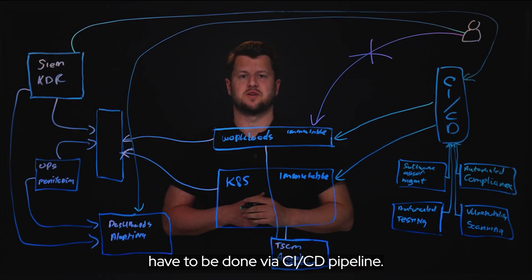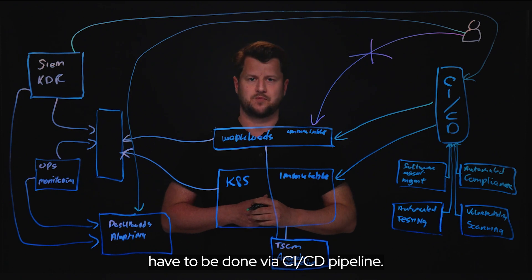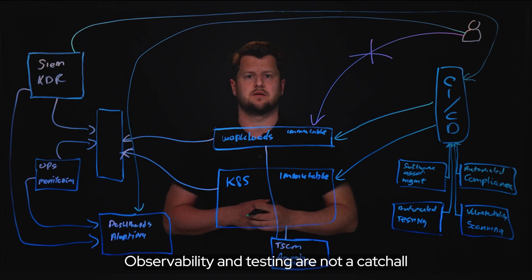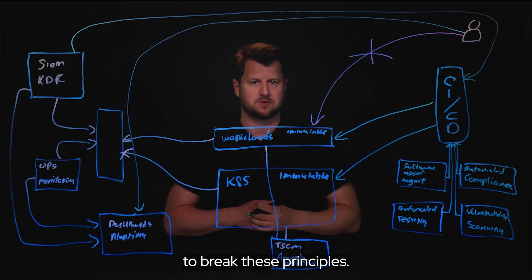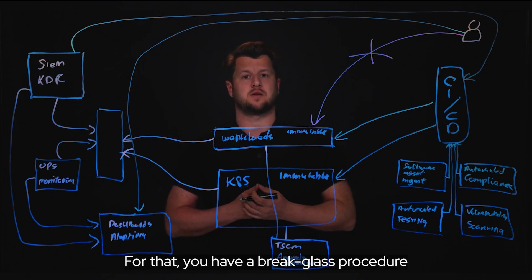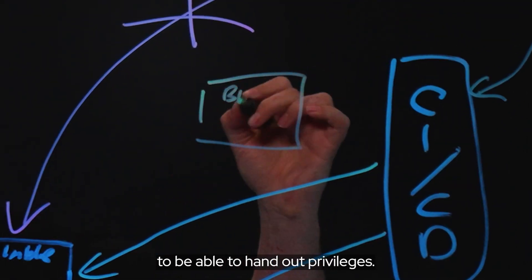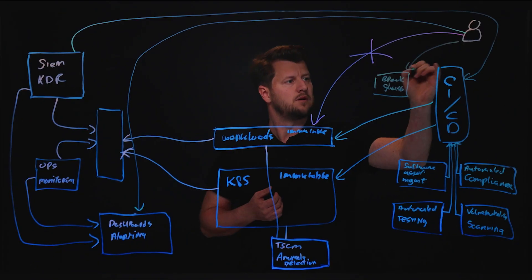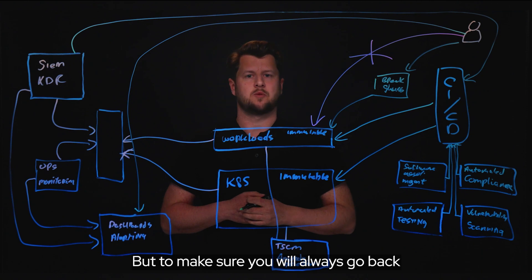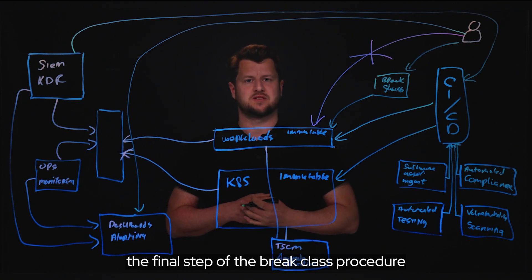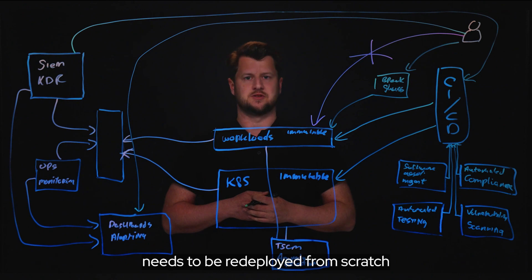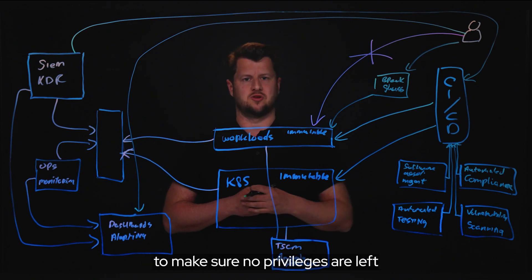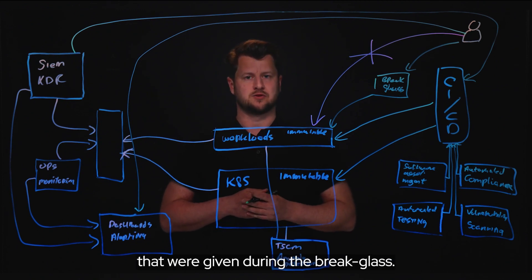All changes to an environment have to be done via CI/CD pipeline. Observability and testing are not a catch-all, and there will always be an unknown situation in which you might need to break these principles. For that you have to follow the break-glass procedure to be able to hand out privileges. To make sure you always return to zero-privilege implementation, the final step of the break-glass procedure is that your entire environment needs to be redeployed from scratch to ensure no privileges remain from the break-glass.